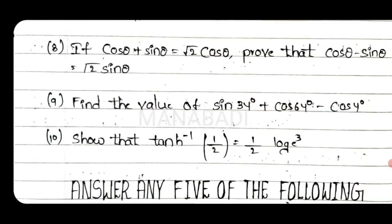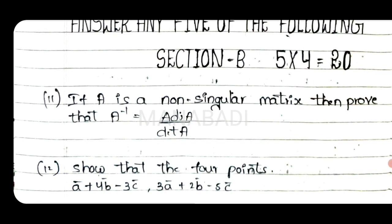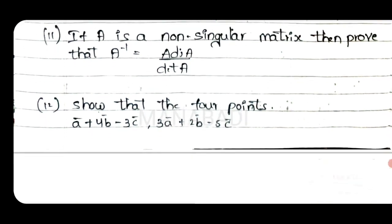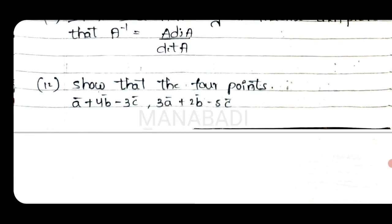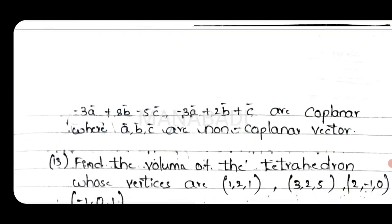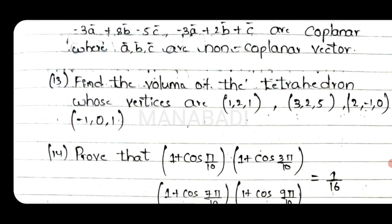So this is the question, and then we will answer any five of the following. Eleventh question: if A is a non-singular matrix, prove that A inverse equals adjoint A by det A. Next, twelfth question: show that the four points — a vector plus 4b minus 3c, 3a plus 2b minus 5c, minus 3a plus 8b minus 5c, and minus 3a plus 2b plus c — are coplanar, where a, b, c are non-coplanar vectors.